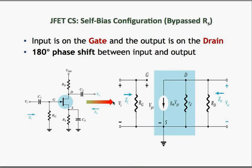Now let us look at the JFET with self-bias configuration. In a self-bias configuration, there is no DC voltage connected to the gate, but there is a source resistor connected to the source terminal. That source resistor is bypassed by a capacitor in AC mode. We repeat the same steps: short-circuit all capacitors and turn off all DC voltages. As a result, the source resistor RS is no longer present in the model because it is short-circuited by the source bypass capacitor CS.